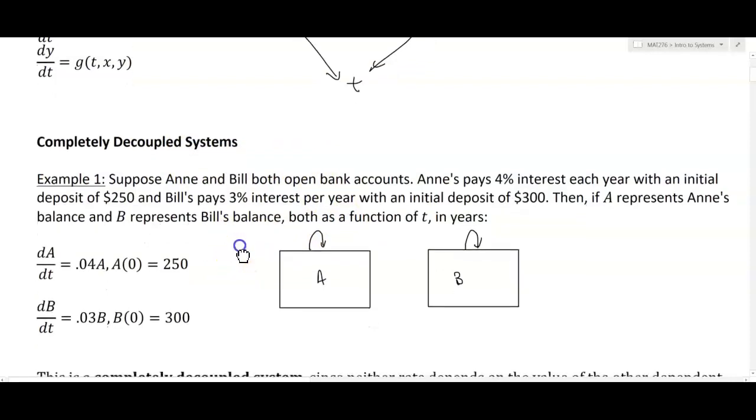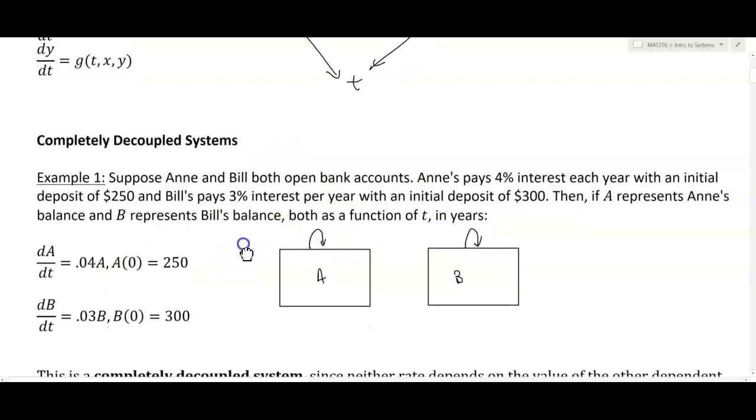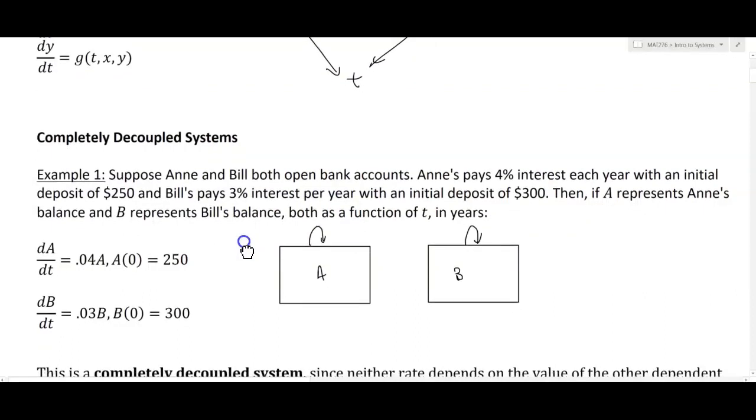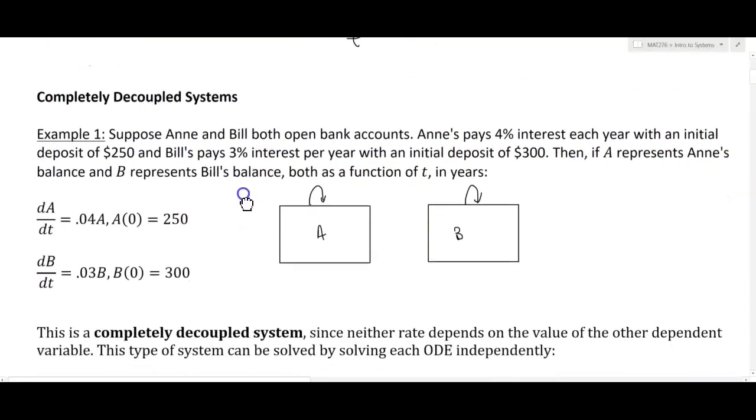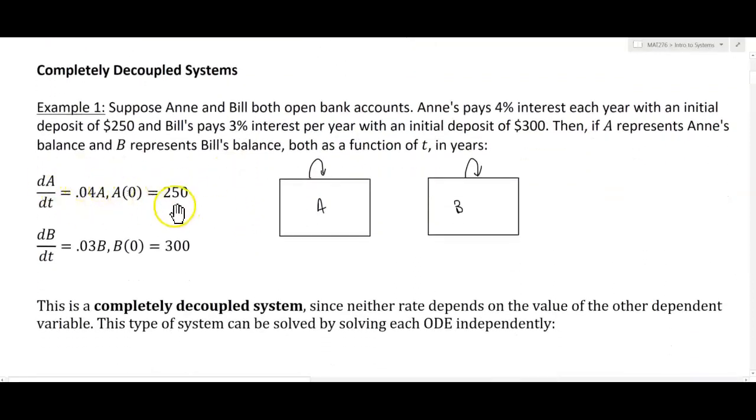It just so happens that they both model balances, and so it makes sense for us to analyze them collectively, especially if we want to compare their balances over time. We see that Ann's money is growing faster, but she has less to start. Bill's balance is growing slower, but he has more to start. So we want to maybe analyze what's going to happen to their balances in the long run.